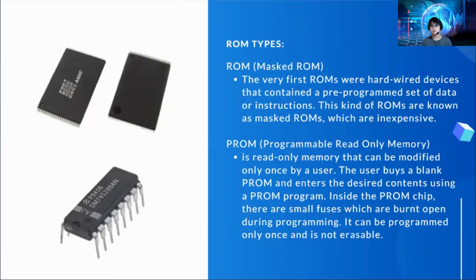We have different types of ROM. First is mask ROM. These very first ROMs were hard-wired devices that contained a pre-programmed set of data or instructions. This kind of ROM is known as mask ROM, which is inexpensive. We also have programmable read-only memory or PROM. PROM is a read-only memory that can be modified only once by a user. The user buys a blank PROM and enters the desired contents using a PROM programmer. Inside the PROM chip, there are small fuses which are burnt open during programming. It can be programmed only once and is not erasable.